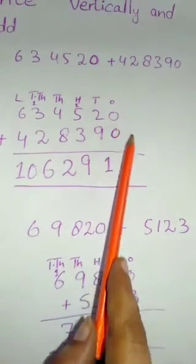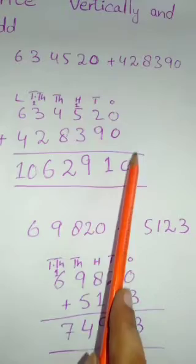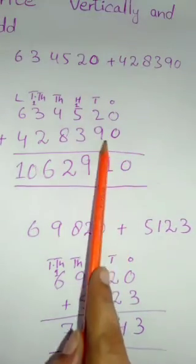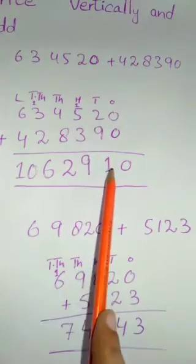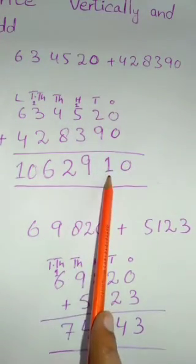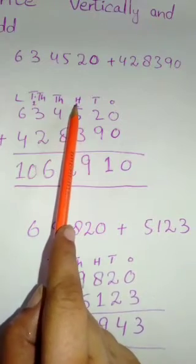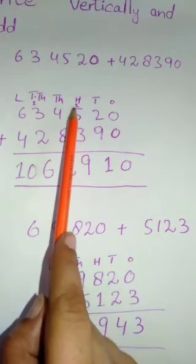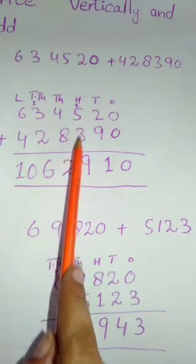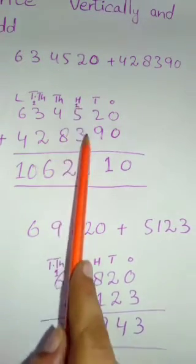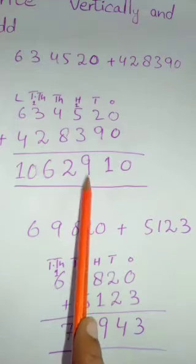Now start addition from your right-hand side. Zero and zero makes zero. Nine and two makes eleven — one will be written here and one will carry over. When you add including this one carry, it makes nine.